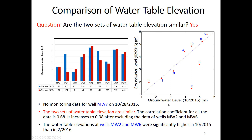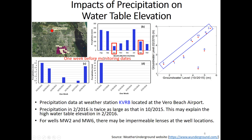The October 2015 and February 2016 groundwater level data fall mostly onto the one-to-one line, except for well two and well six. We tried to understand what causes that difference, and then we looked at precipitation data.